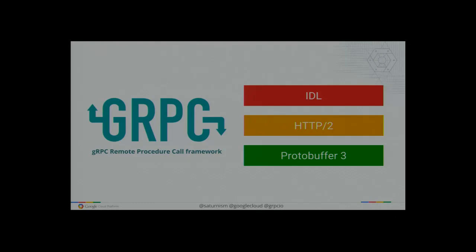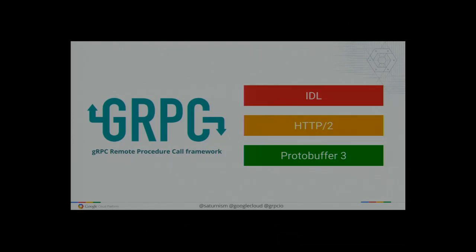For the IDL, it uses Protocol Buffer 3. The payloads are all binary — Protocol Buffer 3 payloads made into efficient binary payloads. The underlying transport between services is using HTTP/2 rather than HTTP/1. HTTP/2 is also a binary protocol, so you don't spend a lot of bytes just describing the verbs. The headers are being compressed for you in HTTP/2 via the algorithm called HPACK.